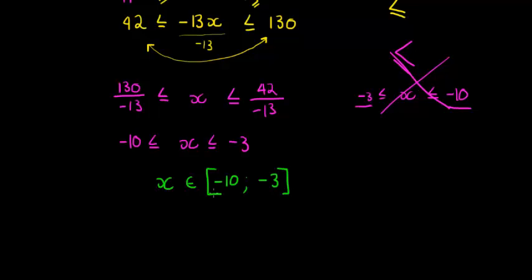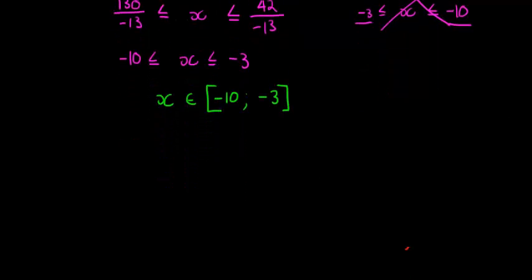So that would be our interval. If I had to go and draw this, obviously this is fairly simple. We have the numbers here going from, let's start by negative 11, negative 10, negative 9.